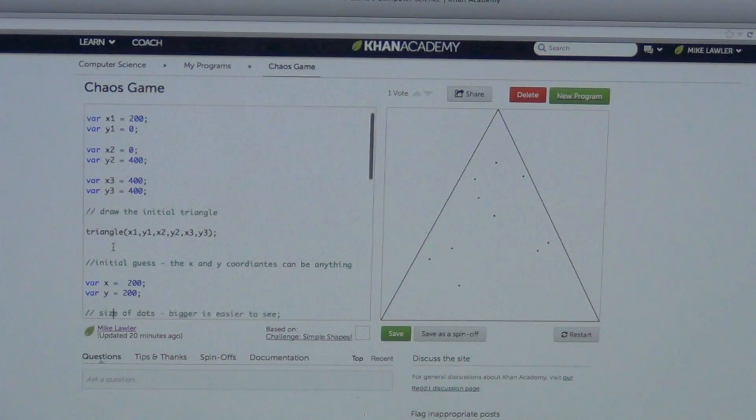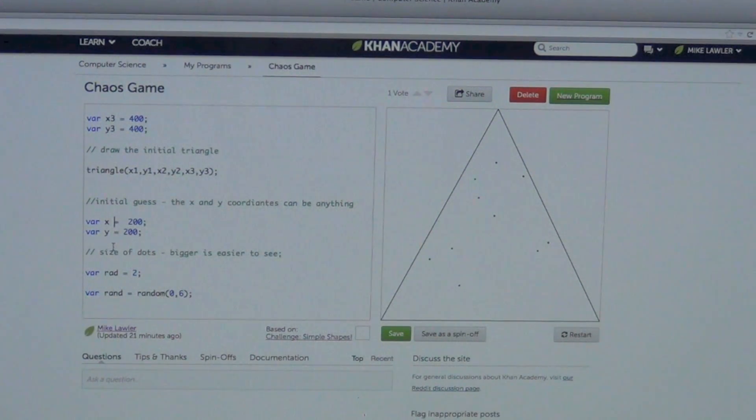And then what we're going to do is here's how the game works. You pick any starting point you want. So in this one I picked x equals 200, y equals 200 just to start. Right here in the middle of the screen. Okay, but you can pick anything you want. Actually, give me a number. Give me a point you want to start at. 100, 300. Okay. 100 comma 300. So we'll start there. So we'll get a different set of dots here.